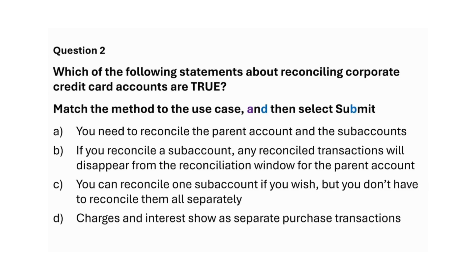Which of the following statements about reconciling corporate credit card accounts are true? Match the method to the use case, and then select Submit. A. You need to reconcile the parent account and the subaccounts. B. If you reconcile a subaccount, any reconciled transactions will disappear from the reconciliation window for the parent account. C. You can reconcile one subaccount if you wish, but you don't have to reconcile them all separately. D. Charges and interest show as separate purchase transactions. Answer: Option B — If you reconcile a subaccount, any reconciled transactions will disappear from the reconciliation window for the parent account.